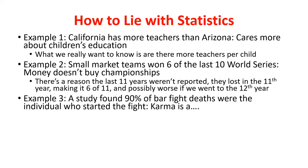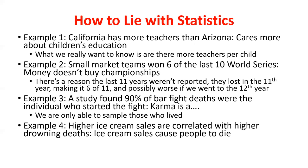Another example: 'A study found 90% of bar fight deaths involved the individual who started the fight — karma is real.' Think about it: when someone dies in a bar fight, there's only one person left to ask who started it. That person is unlikely to admit they started a fight that led to someone's death. So the data itself is biased. We'll talk more about what bias means later in the semester.